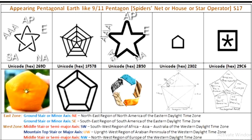Reflect on these pentagons — pentagon as stars. Sincerely reflect on this pentagon and you will find here the stages of journey of the so-called sun: Northeast region of North America, Southeast region of South America, Southwest region of Asia, Africa, Australia, Upright West region of Arabian Peninsula, and Northwest region of Europe.